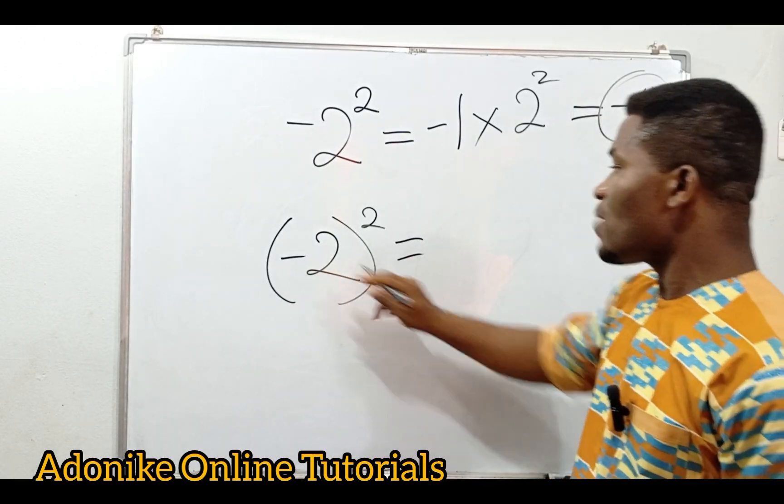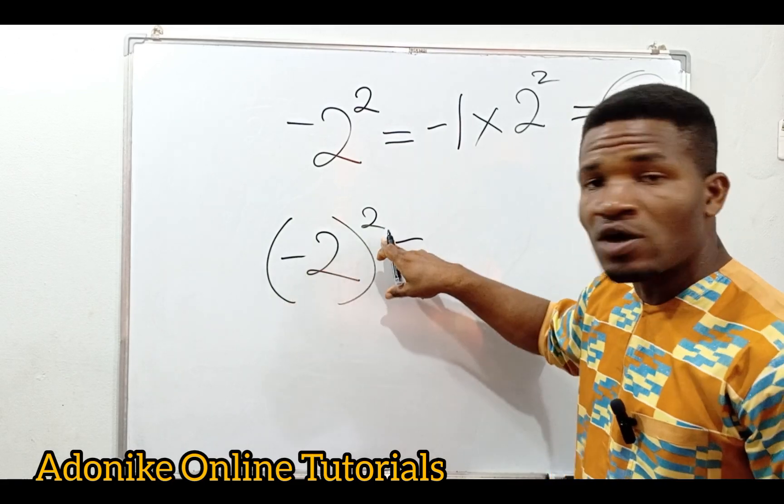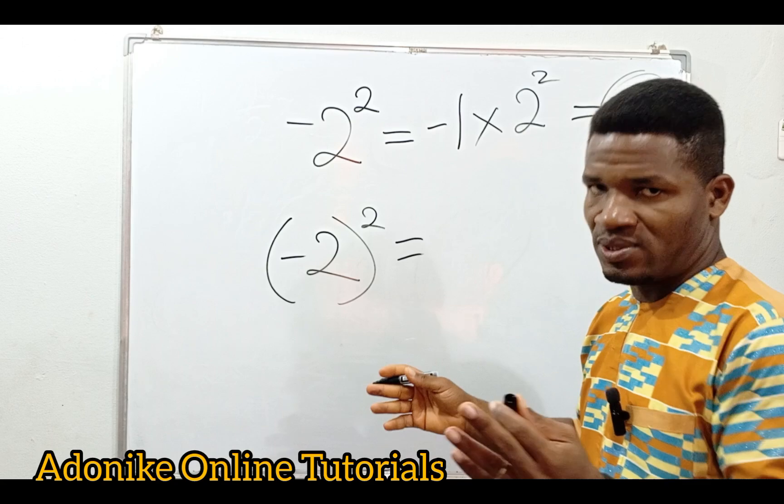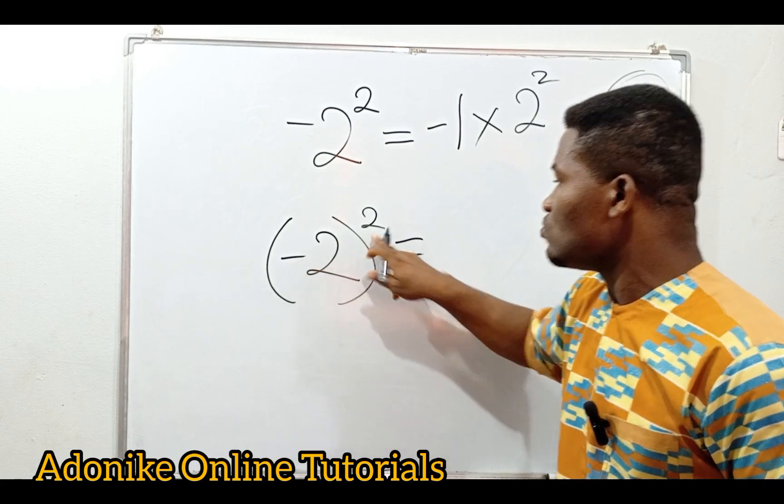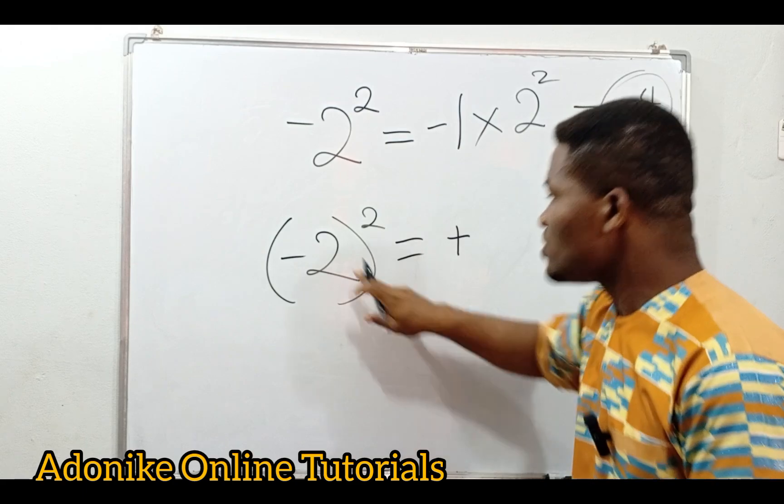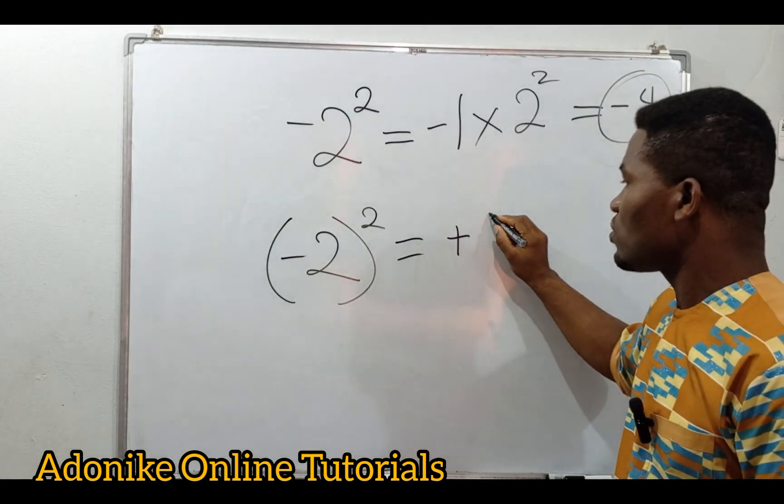So here we have minus times itself. Minus squared means minus times minus. The square of any number is a number multiplied by itself. Minus times minus will give you plus. So minus squared gives you plus, and two squared gives you four because two times two is four.